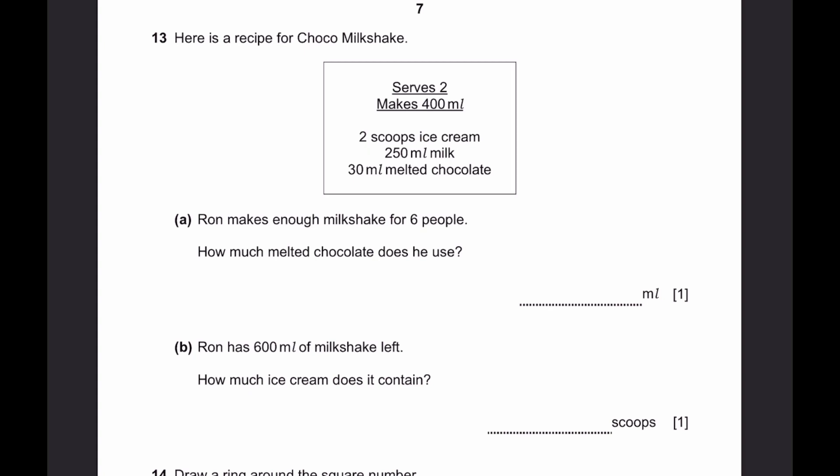Question 13. Here's a recipe for chocolate milkshake. A. Ron makes enough milkshake for 6 people. Remember, in this diagram, it serves 2 people. How much melted chocolate does he need? 2 times 3 is 6. So we need to multiply everything here 3 times. How much melted chocolate? 30 times 3, which equals 90 milliliters. That's the answer.